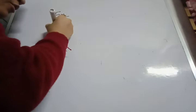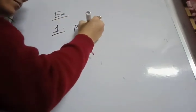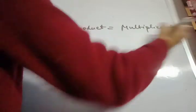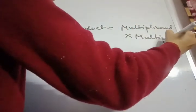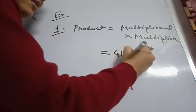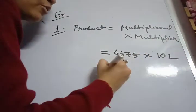Like for example here, exercise 3, if I move to exercise 3, sum number 1. If the multiplicand is 4175 and multiplier is 102, find the product. So it is a straight cut formula. Product is equals to multiplicand into multiplier. So multiplicand is given as 4175 and multiplier is 102. So if we multiply, we are going to get the answer.